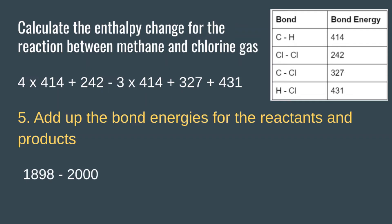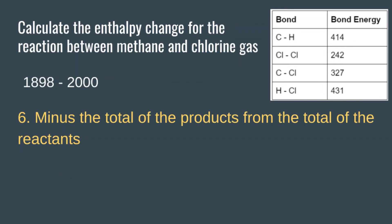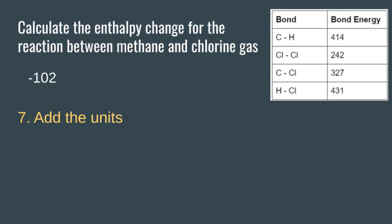You then need to add up the bond energies for all of the reactants and all of the products. In this case the reactants come to a total value of 1898, and the products bond energies come to a value of 2000. We keep the minus in the same position — bond energies of the reactants minus bond energies of the products. So we have 1898 minus 2000, which is negative 102.